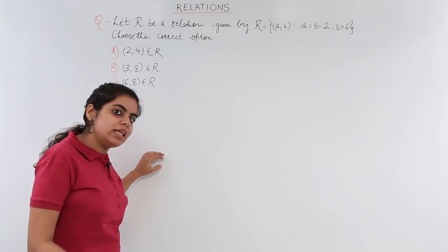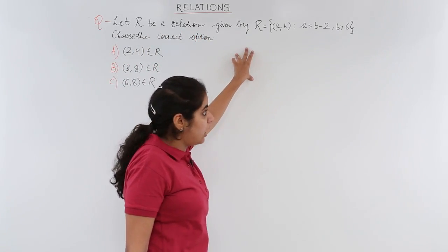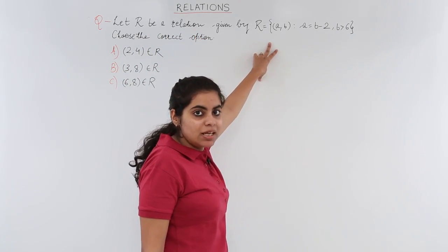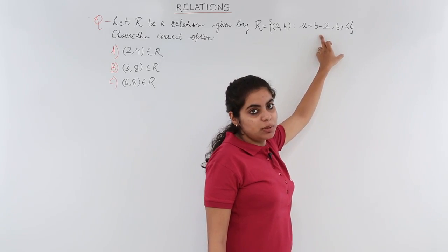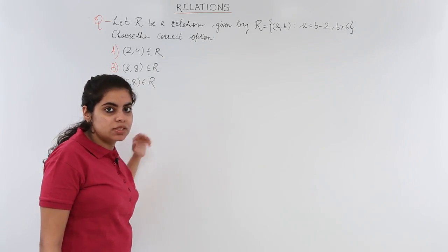Let's read out the question once and then solve it. Let R be a relation given by R is equal to (a, b) such that a is equal to b minus 2 and b greater than 6. Choose the correct option out of these three options.